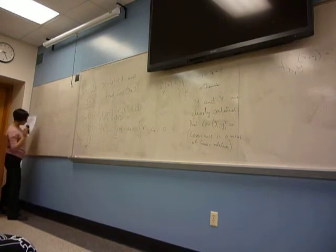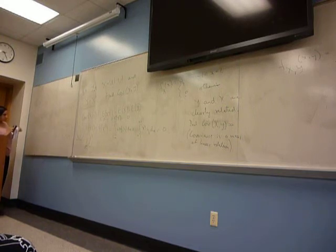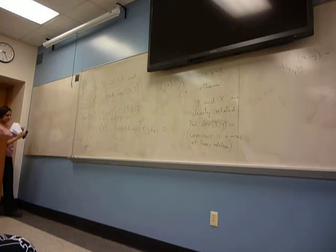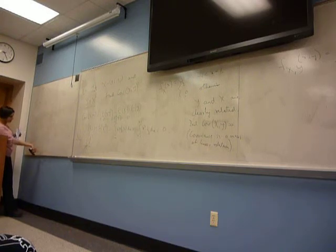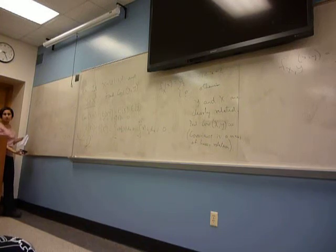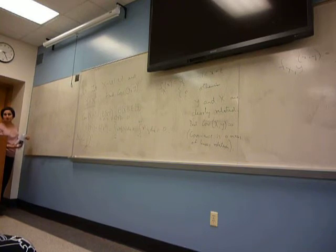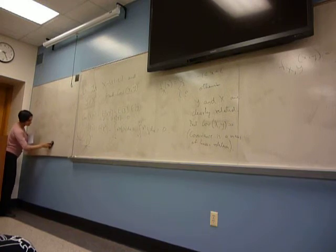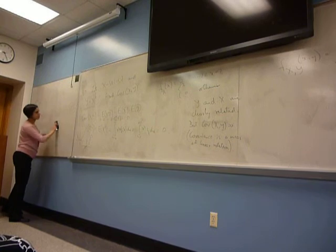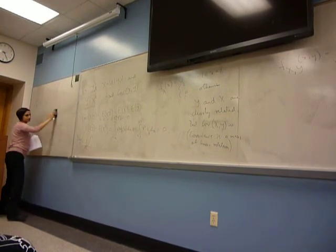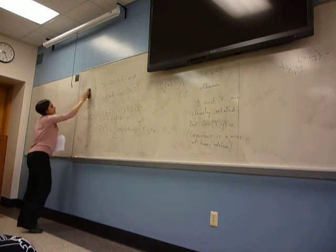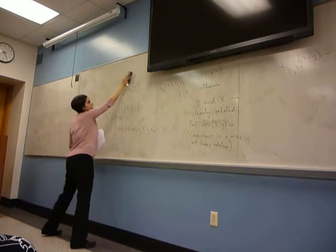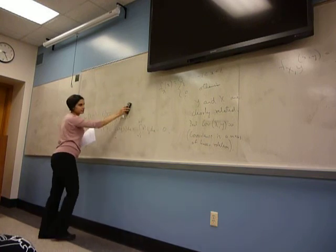You have examples where you have dependent X and Y, but covariance is zero. Only if they're independent do you always get covariance equal to zero; if they're dependent, covariance could still be zero. So zero covariance does not imply independence. Regarding the integral limits — the way the formula is written, all integrals go from negative infinity to plus infinity. When you plug in your density function, over some region it's zero, so that changes your effective limits of integration.